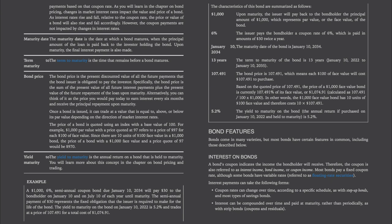The characteristics of this bond: upon maturity, the issuer pays back the principal amount of $1,000 (par/face value). The coupon rate is 6%, paid in amounts of $30 twice a year. The maturity date is January 10, 2034; the term to maturity is 13 years. The bond price is $107.491, meaning each $100 of face value costs $107.491 — so the $1,000 face value bond costs $1,074.91. The yield to maturity, if purchased January 10, 2022 and held to maturity, is 5.2%.